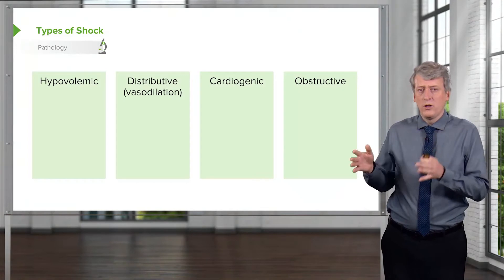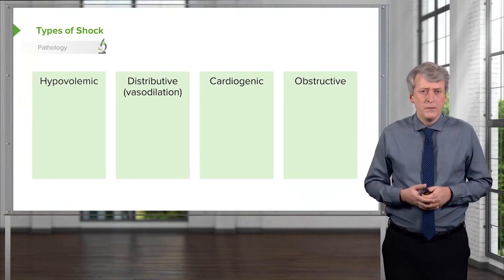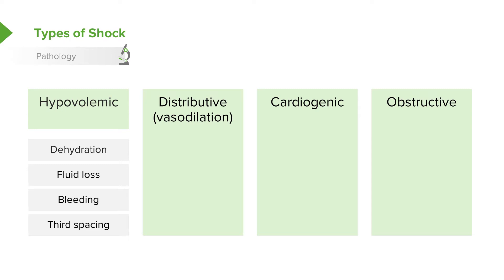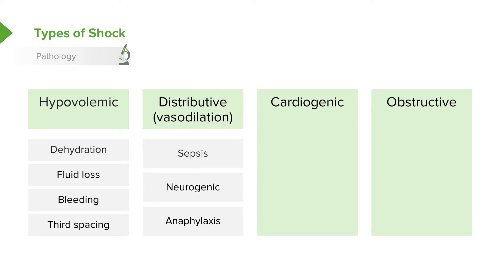There are generally four different categories of shock. Hypovolemic shock typically happens when there's not enough blood volume. This can happen with acute dehydration, fluid loss such as diabetes insipidus, bleeding, or third spacing when fluid has come out of the blood vessel. The next is distributive shock, which typically happens in patients who have sepsis, spinal injury causing neurogenic shock, or anaphylaxis as a reaction to an exposure — all resulting in vasodilation.